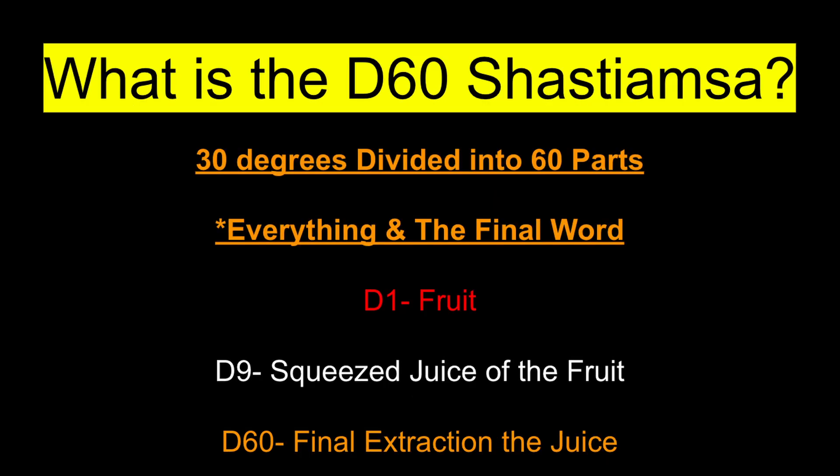What is the D60 chart? The D60 chart is when we take 30 degrees — which is an entire sign or house in the natal chart — and divide it into 60 equal parts. This is breaking down the natal chart all the way. This is why it's very important when using this chart to be very careful about the birth time you are using.